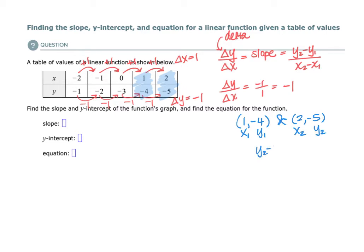So if you're thinking of it as y sub 2 minus y sub 1 over x sub 2 minus x sub 1, you could do it that way as well. We're going to take negative 5, my y sub 2, minus negative 4, which is my y sub 1, divided by x sub 2, positive 2, minus x sub 1, positive 1. So that would be negative 5 plus 4 over 2 minus 1, which is 1, which would also give us negative 1 over 1, which is just negative 1.